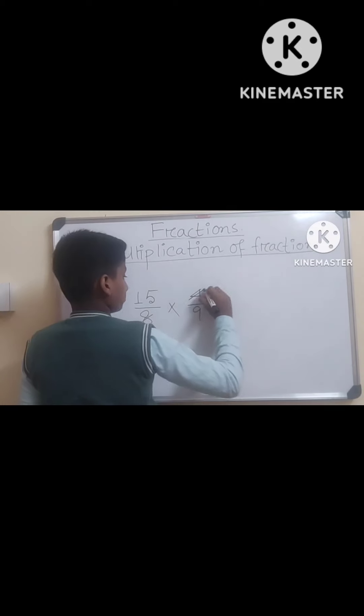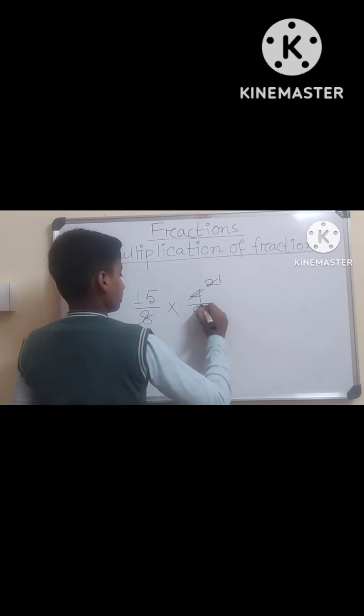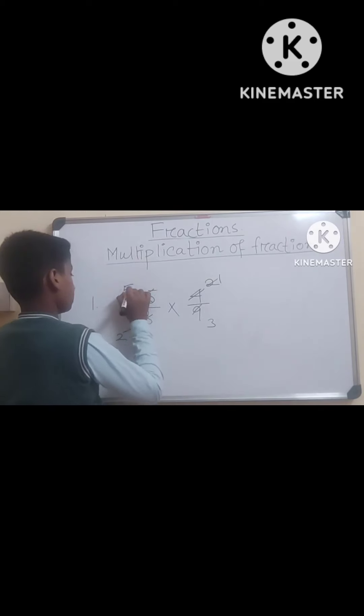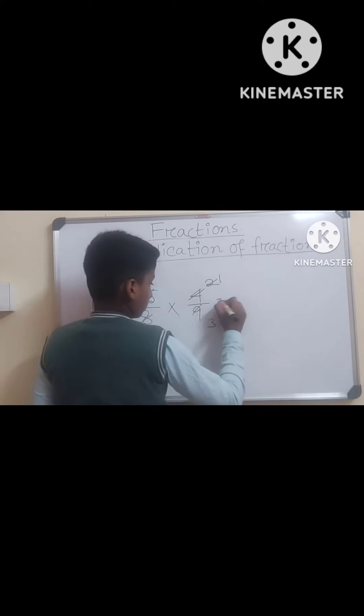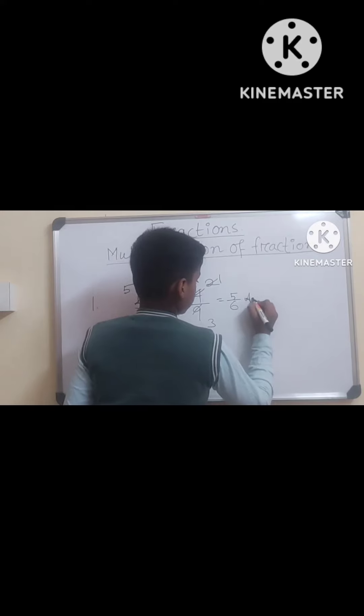Now we have 2 times 2 is 4, 2 times 4 is 8, 2 times 2 is 4, 2 times 1 is 2, 3 times 3 is 9, 3 times 5 is 15. 1 times 5 is 5, 2 times 3 is 6. 5 by 6 into 5.